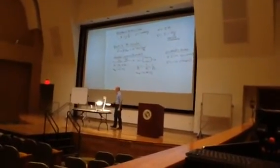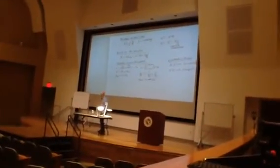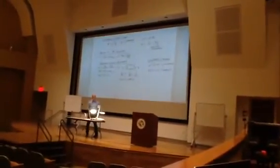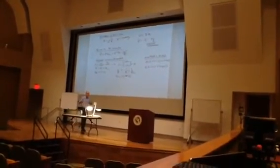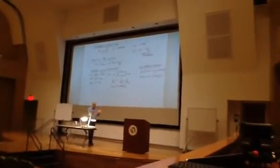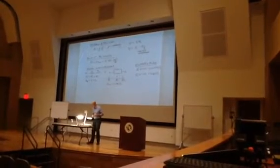So if I go around any loop in a direct current circuit, the sum of the voltages around that loop has to equal zero. If I go into and out of any junction, the sum of the currents into any junction and out of any junction must also be zero.